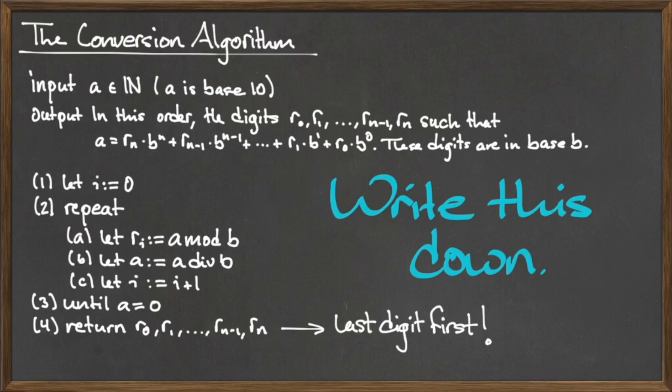Our first step is to create the variable i and assign it the value of 0. Next, we enter a loop consisting of 3 steps. The first is to create the variable r sub i and assign it the value a mod b.